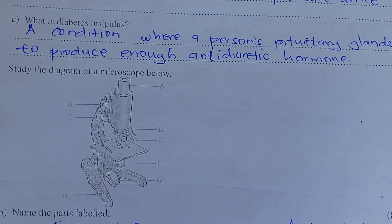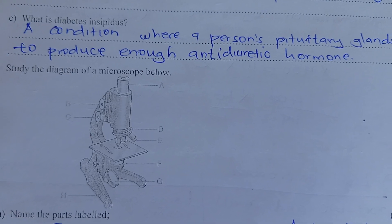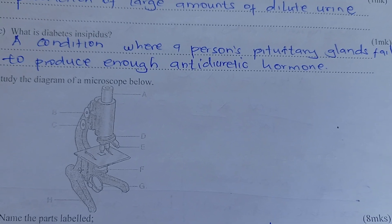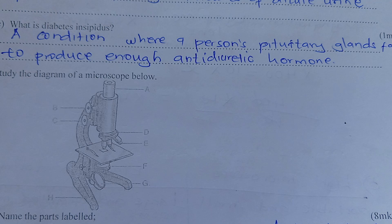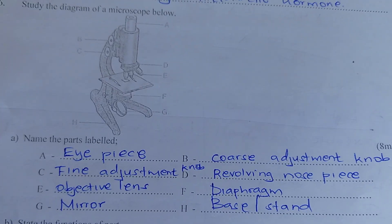What is diabetes insipidus? It's a condition where a person's pituitary gland fails to produce enough antidiuretic hormone.